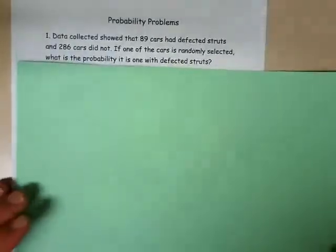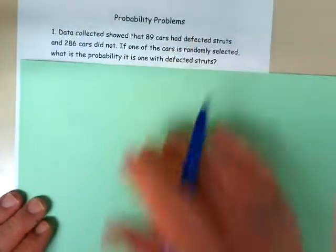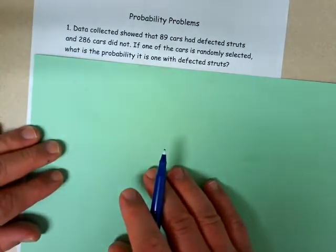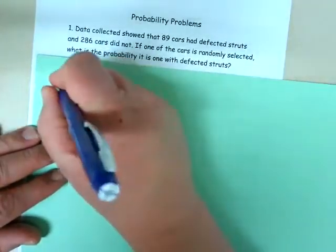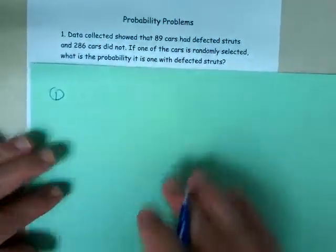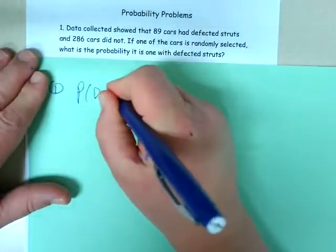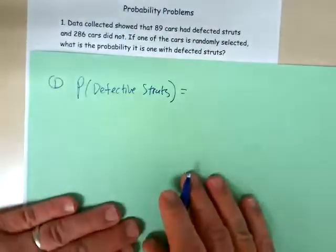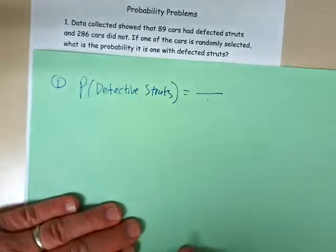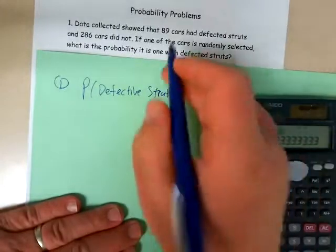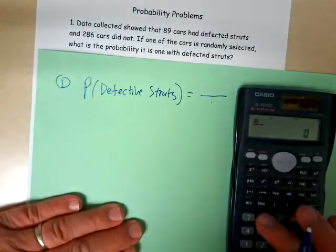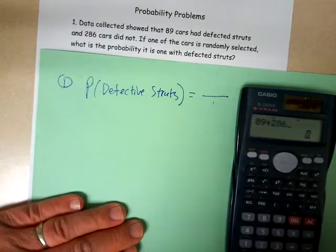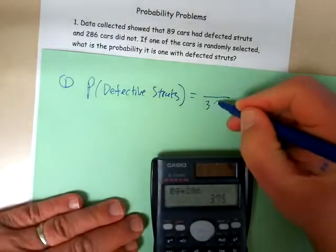Let's see how you did. This first problem says data collected show that 89 cards had defective struts, 286 cards did not. If one of the cards is randomly selected, what's the probability that it has defective struts? So I need to find that bottom number — you have to add these two together to get the total number of outcomes. So 89 plus 286 gives me 375, and that's my bottom number.